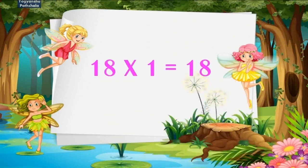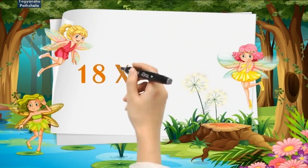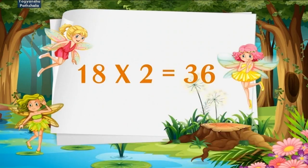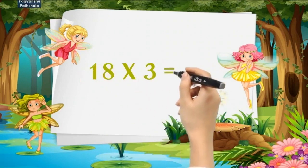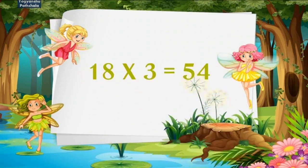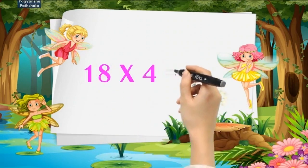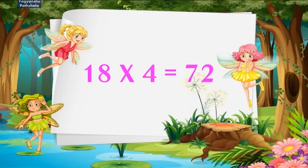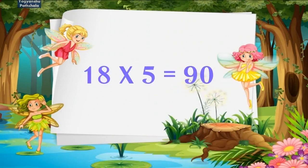18 times 1 is 18. 18 times 2 is 36. 18 times 3 is 54. 18 times 4 is 72. 18 times 5 is 90.